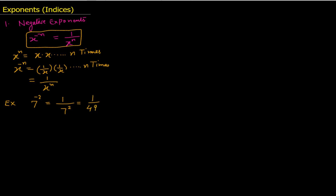Some people also suggest doing negative exponents in two steps. Step 1: ignore the negative sign and just find 7 raised to the power 2, which is 49. Step 2: take the reciprocal of this number, which is equal to 1 divided by 49. Whatever approach you find easy — you can either move the minus sign to the denominator and make it positive, or ignore it, find the positive power, and then find the reciprocal.